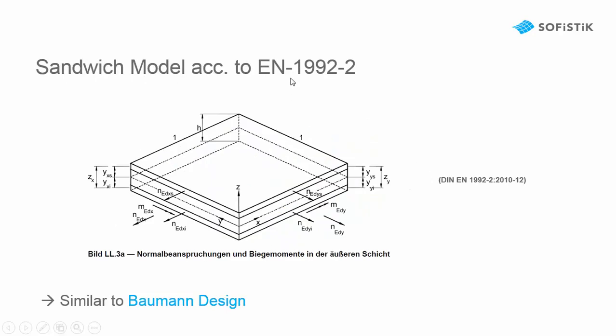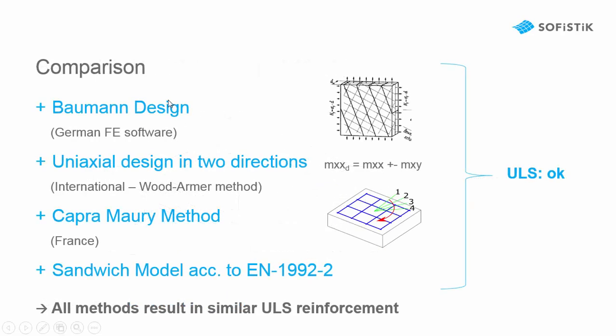The sandwich model of Eurocode is nearly the same as the Bauman design because the forces are also divided into two disks on top and on bottom of the slab. If we compare the four methods we find that in the ultimate limit state all methods give nearly the same necessary reinforcement.